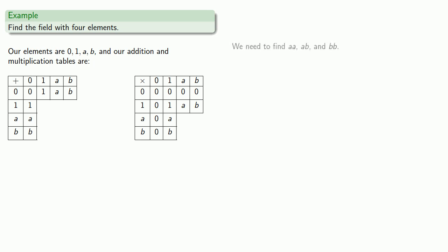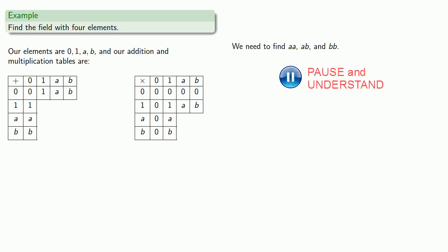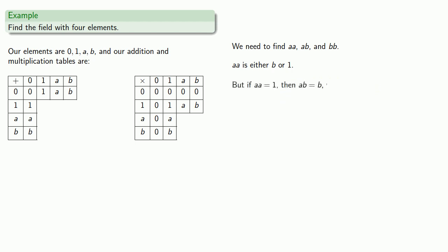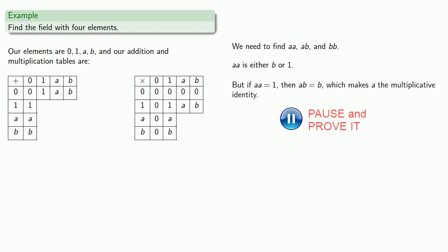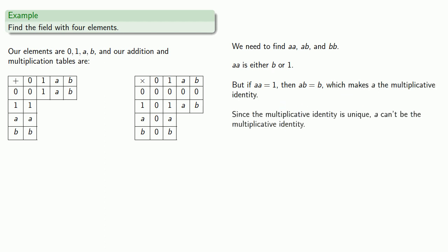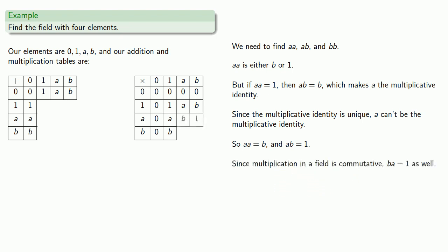Since we know more products than sums, we'll complete our multiplication table first. We need to find a times a, a times b, and b times b. Products have to be distinct, and since a times 0 is 0 and a times 1 is a, then a times a can't be 0 or a — it must be b or 1. But if a times a is 1, then a times b would have to be b, making a the multiplicative identity. Since the multiplicative identity is unique, a can't be it, so a times a must equal b, which means a times b has to be the identity 1. Since multiplication is commutative, b times a also equals 1, and by uniqueness of products, b times b must equal a.